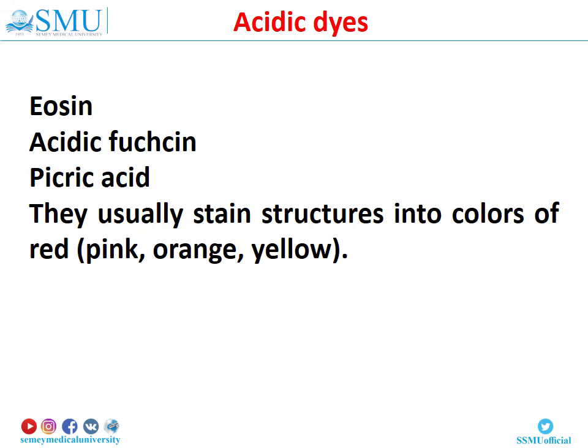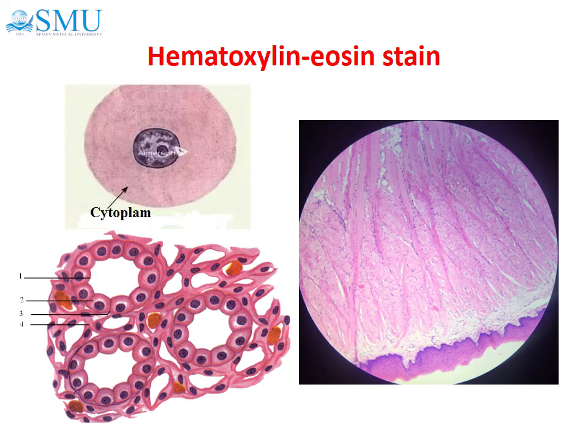Acidic dyes – eosin and picric acid – are salts of staining acids. They usually stain structures in colors of red, pink, orange, and yellow. Eosin is an acid dye that stains the basic components of the cell a pinkish color. Because many cytoplasmic constituents have a basic pH, regions of the cytoplasm stain pink. These elements are said to be oxyphilic or acidophilic. Here you can see a slide section of tongue stained by hematoxylin and eosin.